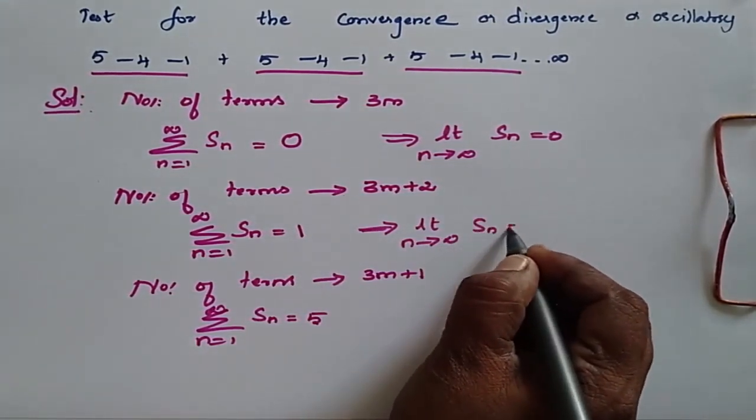Limit of n tending to infinity of Sn is equal to zero here. Limit of n tending to infinity of Sn is equal to one here. Limit of n tending to infinity of Sn is equal to five. So when I look at this series, there is no unique limit, so I say that this is oscillatory.